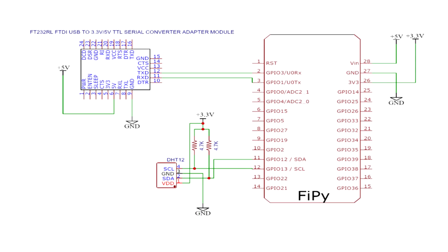To start with this, we will first make the required connections. We are connecting the DHT12 sensor with the FiPy module. As the sensor comes with an I2C interface, the connection is pretty straightforward. The SDA pin of the sensor goes to the SDA pin of FiPy, and the SCL pin goes to the SCL pin. Both lines are pulled up by 4.7 kΩ resistors to 3.3V, which comes from the 3.3V output of the FiPy module. The ground of the sensor goes to the ground pin of the module.